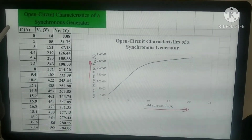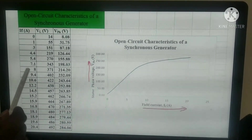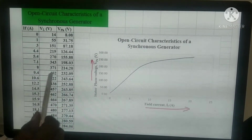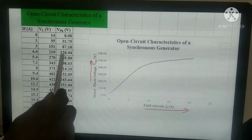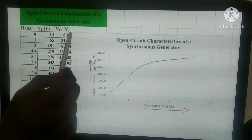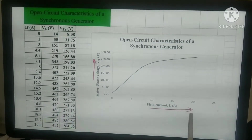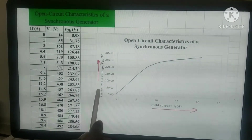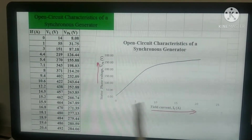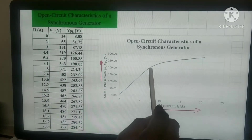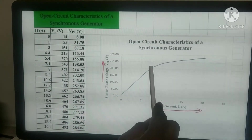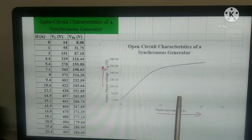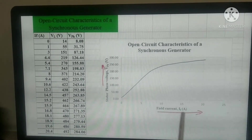We have written the observation values from the open circuit characteristics experiment. In the first column we have field current in amperes, in the second column the line voltage in volts, and in the third column the per-phase voltage which equals line voltage divided by root 3. On the graph, the x-axis has field current in amperes and the y-axis has stator per-phase voltage in volts. From this characteristic, up to the saturation point the stator open circuit voltage increases linearly with respect to field current. After the saturation point, the stator per-phase voltage increases non-linearly with respect to field current.